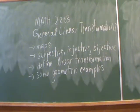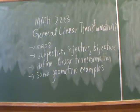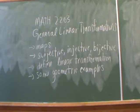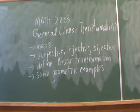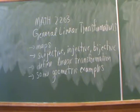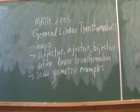In this Math 2203 video we're going to take a look at general linear transformations. To start off we're going to talk about maps — functions that send elements from one set to another set. We'll talk about special maps called surjective, injective, and bijective, which you may have heard as one-to-one and onto functions. After that we'll define what a linear transformation is, see some examples, and then look at some geometric examples in R2.